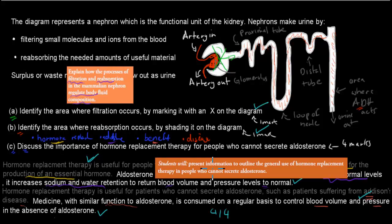The other one was: students will present information to outline the general use of hormone replacement therapy in people who cannot secrete aldosterone. And discuss the importance of hormone replacement therapy is basically the same as this dot point.